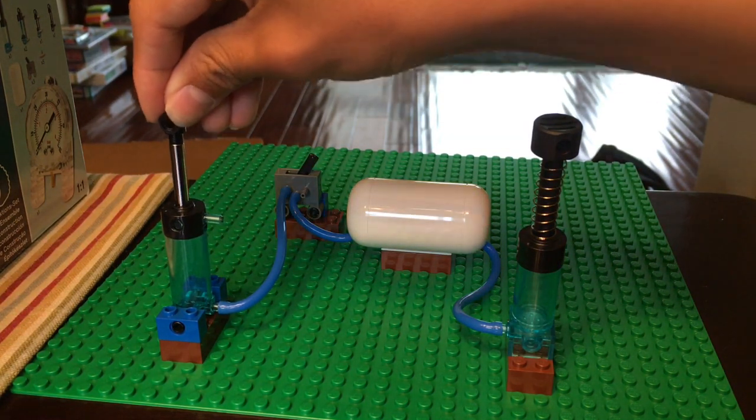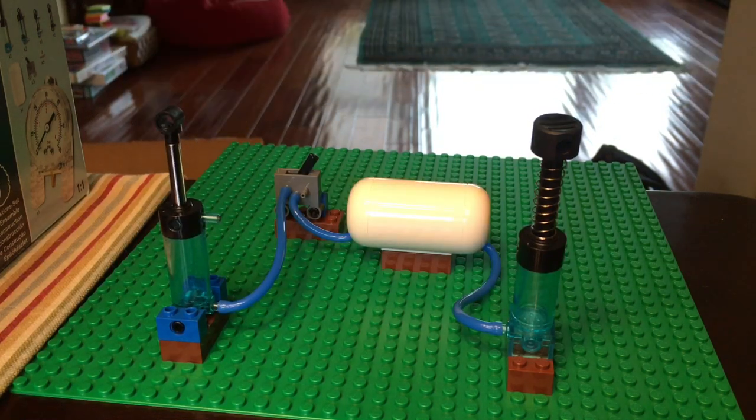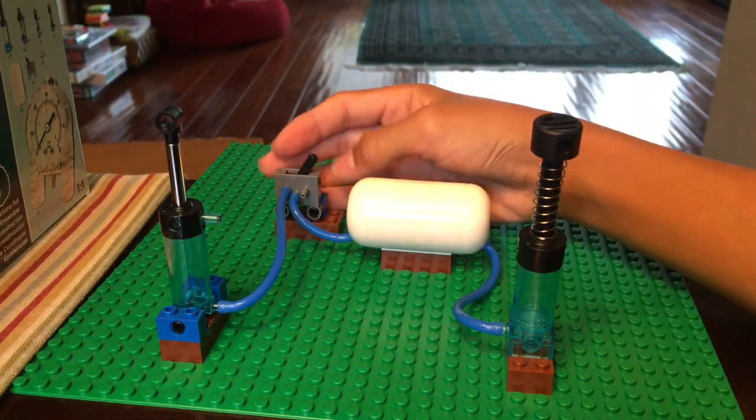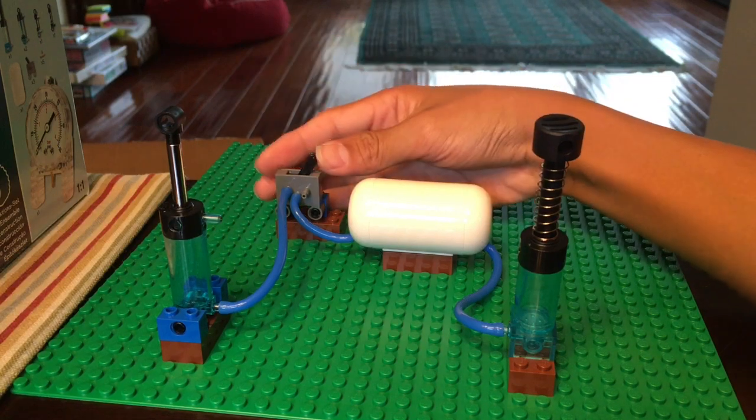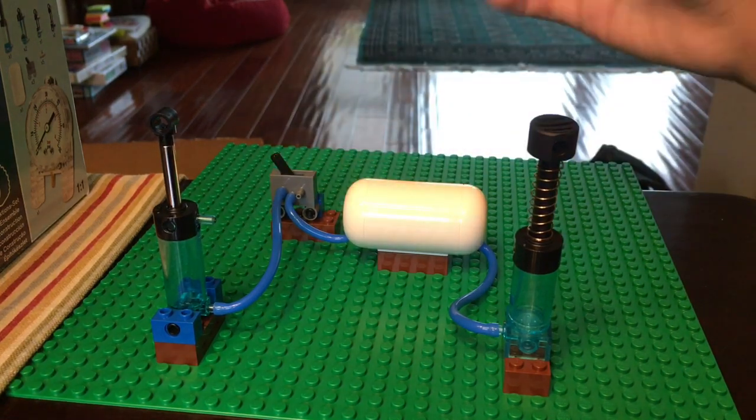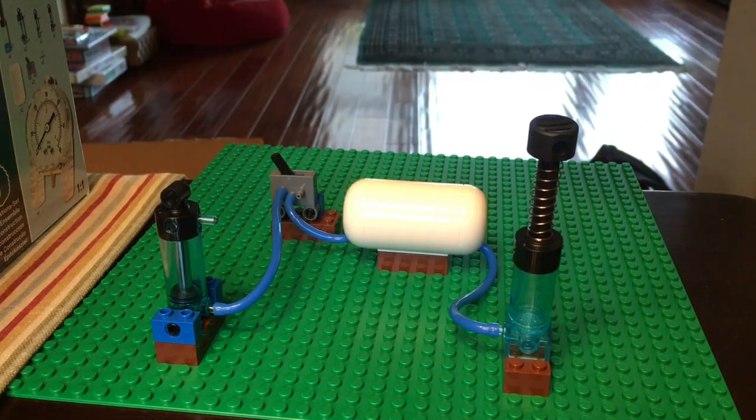As you can see, the piston cannot be pushed down because there is obviously air pushing it back up. So in order to release the air, we can flick the switch back all the way to the left. And now the air has been released and you can reset it.